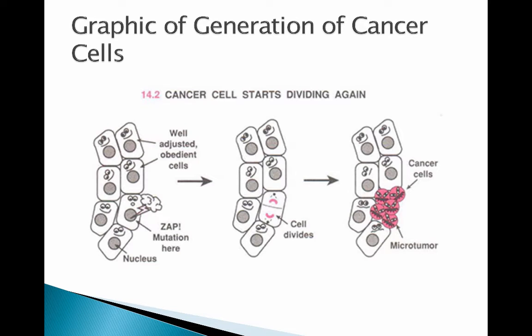There's a graphic showing how cancer cells start dividing. You get a mutation in a cell, it starts growing in an unregulated manner, and if those cells keep growing they become cancer.